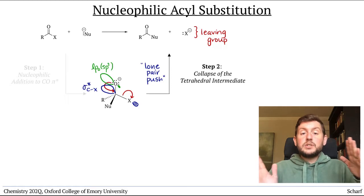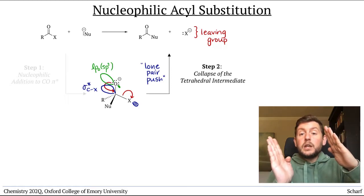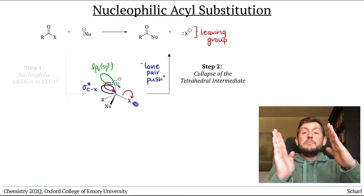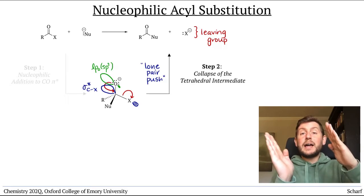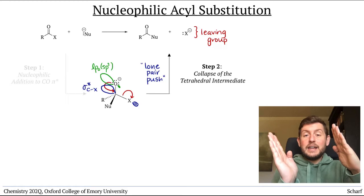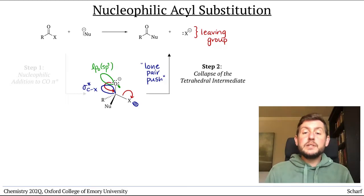As these orbitals interact, you can see that we're forming a new pi bond between carbon and oxygen, because those two orbitals are overlapping side to side. The result is that the CO double bond, the carbonyl group, is reformed and the leaving group leaves.